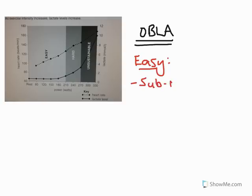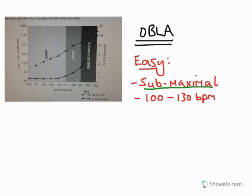In the easy stage, this exercise is what we describe as submaximal — something like a training run, for example. We have a heart rate on this curve of between 100 and 130 beats per minute, which emphasises that notion of submaximal intensity exercise. As a result, the predominant energy system is the aerobic system.